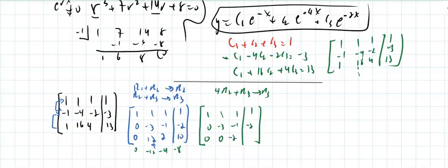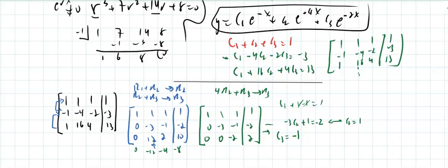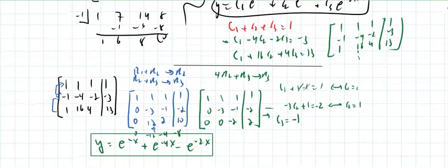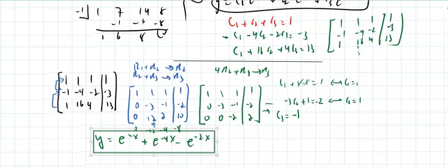Back-substituting, c₃ equals negative 1. Then negative 3c₂ plus 1 equals negative 2, so c₂ equals 1. And c₁ plus 1 minus 1 equals 1, so c₁ equals 1. The particular solution to the initial value problem is y equals e^(negative x) plus e^(negative 4x) minus e^(negative 2x). That concludes this section.